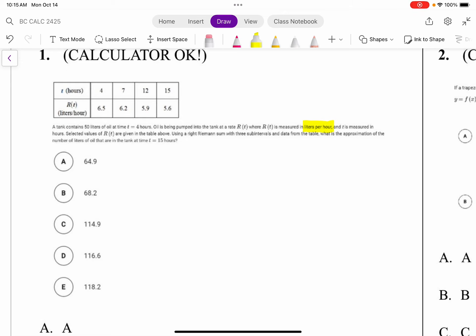Using a right Riemann sum with three sub-intervals and data from the table, what is the approximation of the number of liters of oil that are in the tank at time t equals 15 hours?